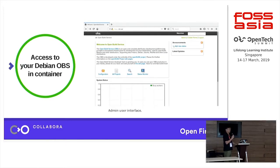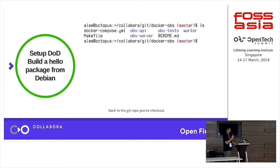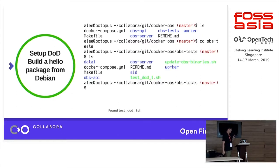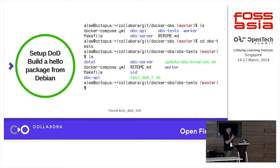Since everything is complicated on the web, we created a simple script to help set it up. Go back to the repository you previously checked out, navigate into the obs-test folder, and you'll see a script provided there. The script name contains 'dod' which stands for 'download on demand' — because your infrastructure builds distributions but you can't store the full mirror locally, so it automatically fetches dependencies from the remote repository from Ubuntu or Debian, saving space on your infrastructure.